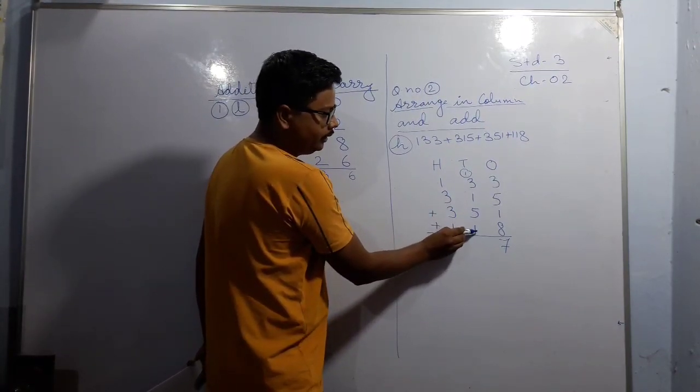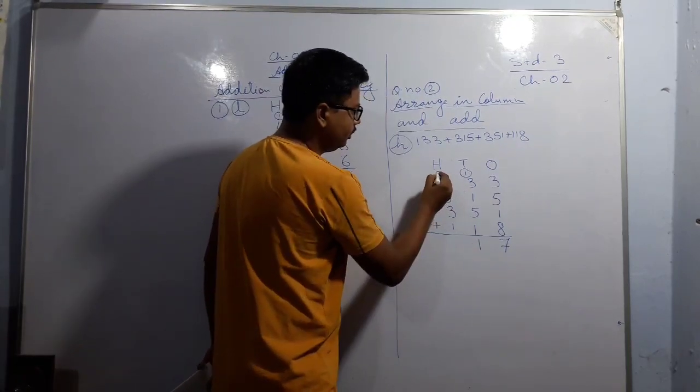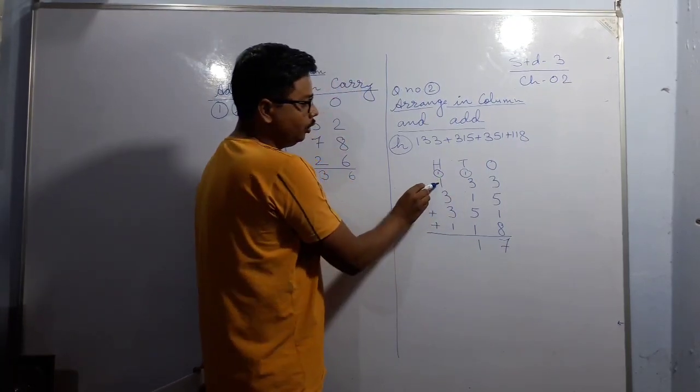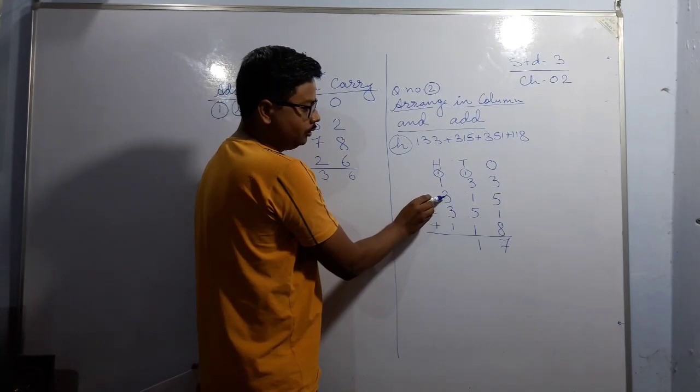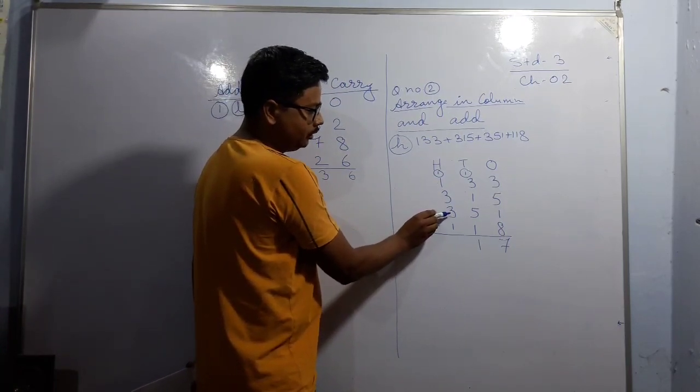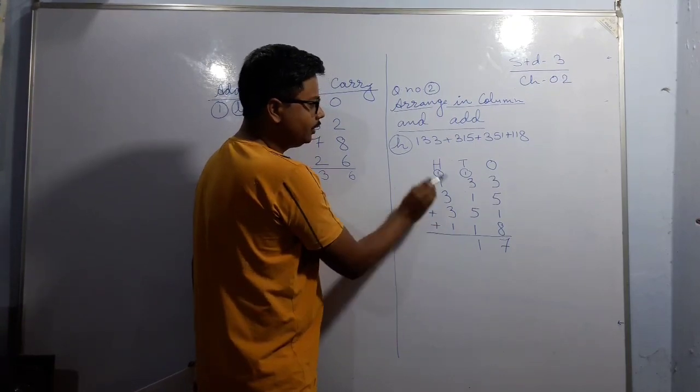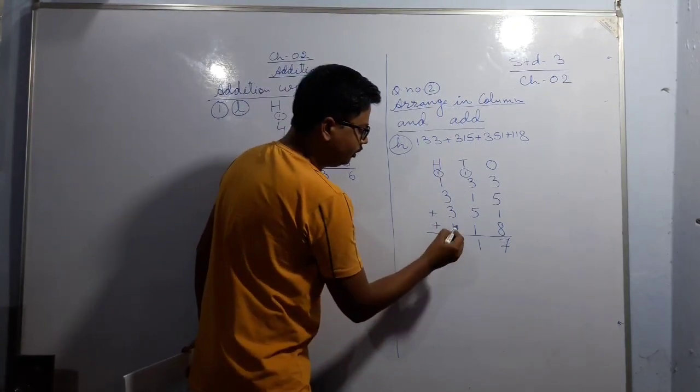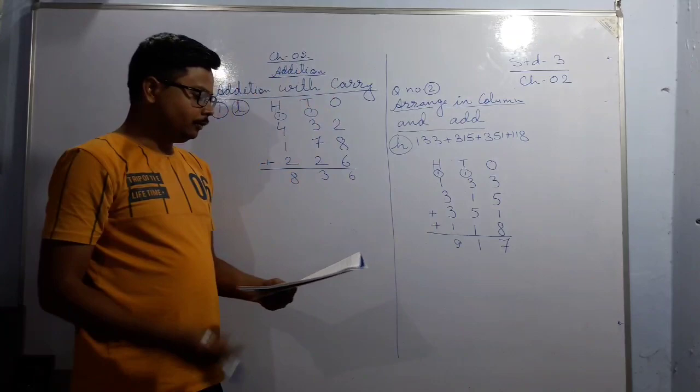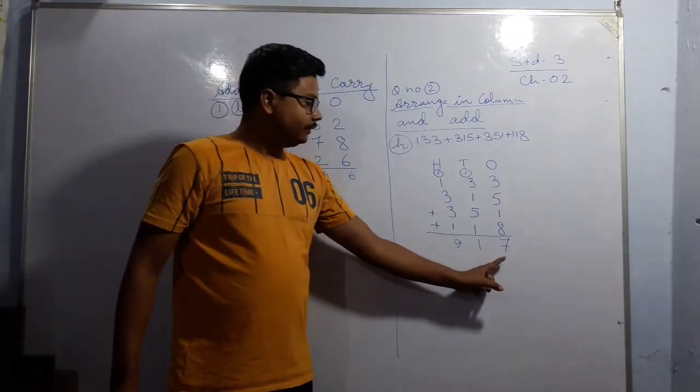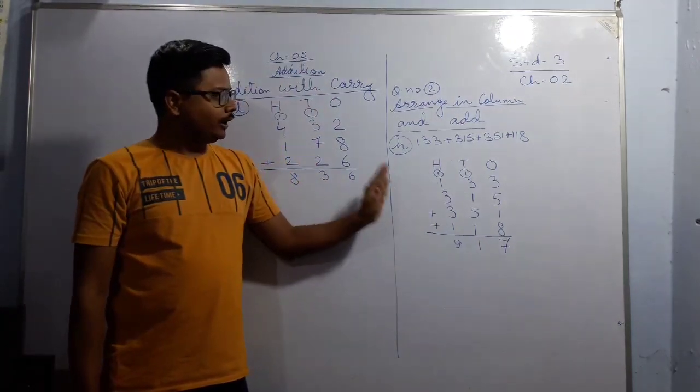1 + 3 = 4, 4 + 3 = 7, and 7 + 1 = 8, 8 + 1 = 9. So your final answer will be 917.